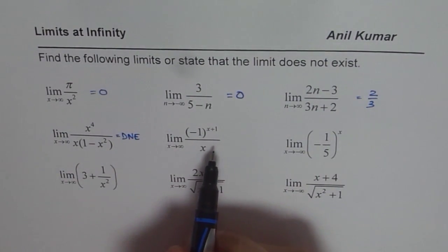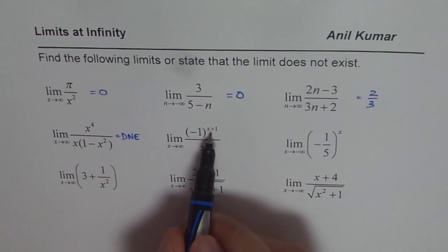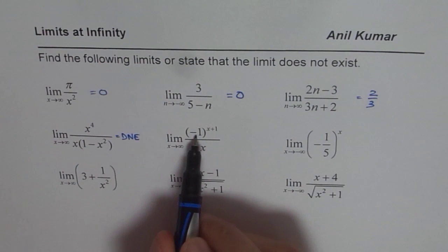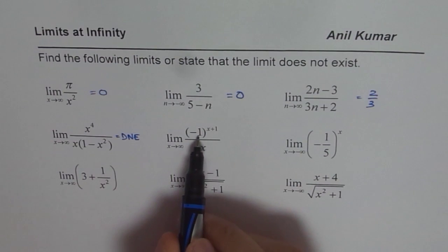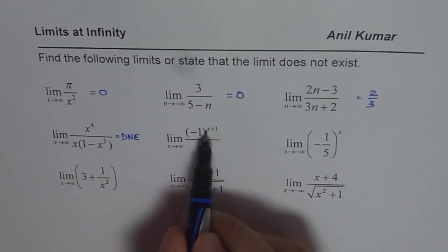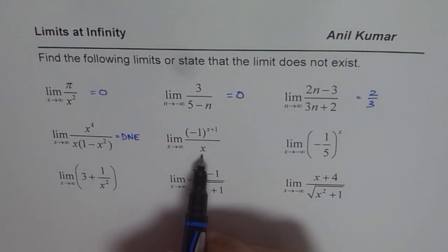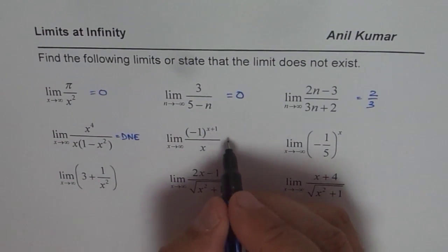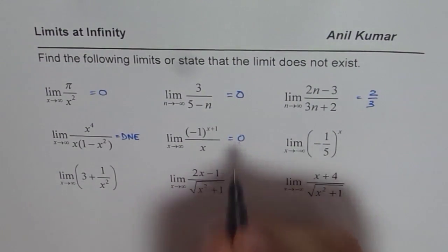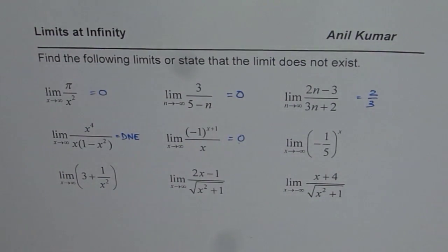In this case, negative 1 to the power of a very large number could be either negative or positive 1. This value will be either negative 1 or positive 1 depending on whether the exponent is even or odd. But the denominator has x, so if x is very large, we are dividing 1 or negative 1 by a large number. In both cases we approach 0, so the answer is 0.